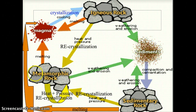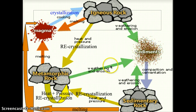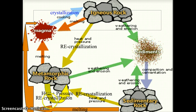Let's look at the third rock group: metamorphic rocks. How do you change a metamorphic rock? Well, you can always melt it into magma. You can always weather and erode it into sediment. And the fun one — you could always use heat and pressure to recrystallize it into a new and different metamorphic rock. And that pretty much sums up the beautiful rock cycle.